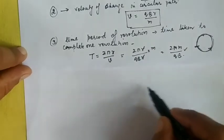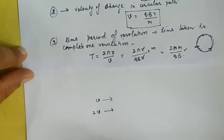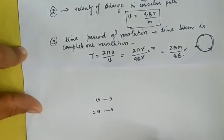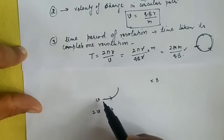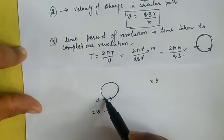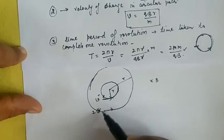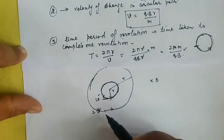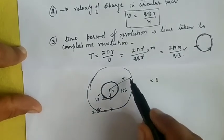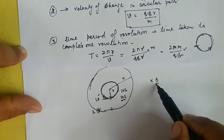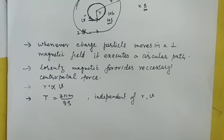Consider two charged particles: one moving with velocity V and another with velocity 2V, both in the same perpendicular magnetic field pointing into the plane of the paper. The first has a smaller radius of revolution and the second has a larger one. However, if they both start at the same point, both will complete one full revolution in exactly the same time — provided the magnetic field, charge, and mass are the same.